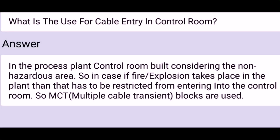What is the use for cable entry in a control room? In the process plant, the control room is built considering the non-hazardous area. So, in case a fire explosion takes place in the plant, that has to be restricted from entering into the control room. So, MCT — multiple cable transient blocks — are used.